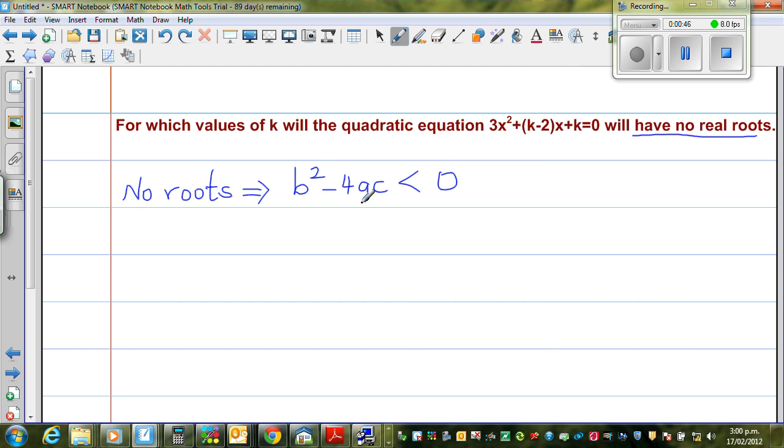Now the next thing we need to find is what is a, what is b, and what is c. a is the coefficient of x², which is 3. b is the coefficient of x, which is (k-2), and c is the constant, so c is k.